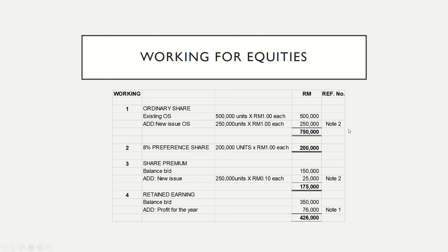Please refer to Note 2. It is stated that on 30th October 2017, Zita Berhad issued 250,000 ordinary shares at RM1.10 each for cash. The par value of the ordinary share is RM1; therefore, the other 10 cents is equivalent to the share premium. The new issue is 250 units times RM1 par value, giving total ordinary share capital of RM750,000.